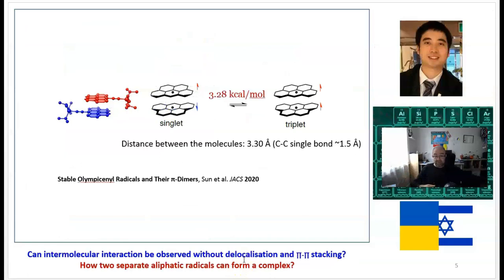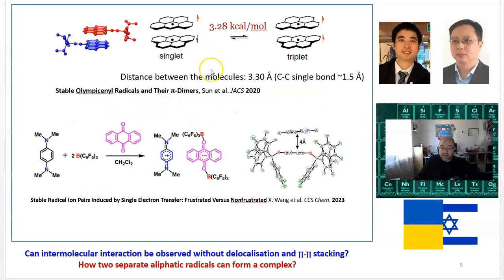That's another work I showed before about two radicals which look like Olympic rings which form dimers bounded by pi-pi interactions. Despite the very long distance between those radicals—3.3 angstroms while the single bond is 1.5—the ground state of this dimer is a singlet. It's more stable than triplet by 3.28 kilocalories, and this is not a single example.